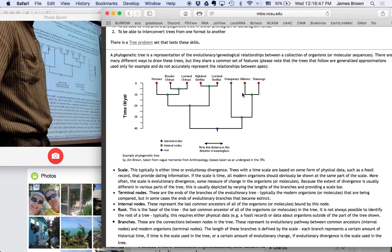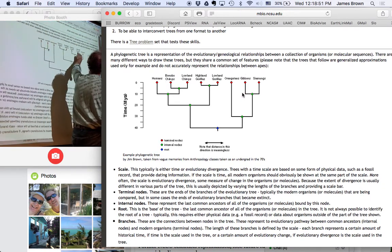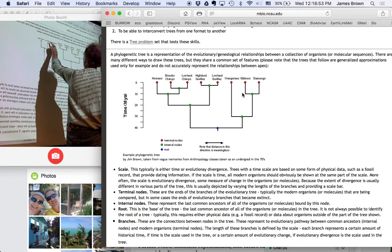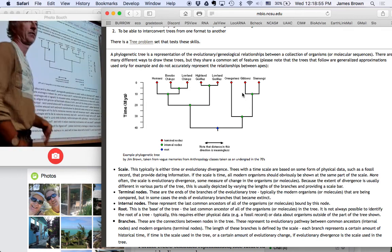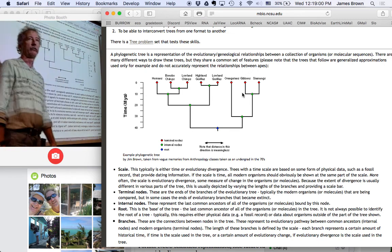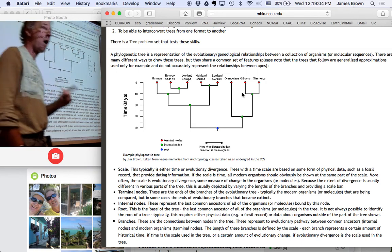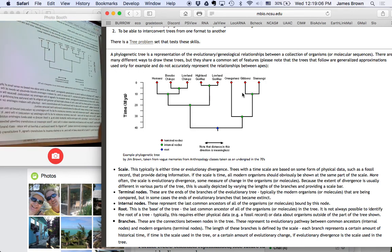So what are the parts of this tree? You've got terminal nodes. Some people call these leaves, right? It's the leaf of a tree. These represent the sequences you included in your analysis. Most of the time, these are all modern sequences. Unless you're working with extracting sequences from museum samples or ancient environments of some kind, all of these sequences come from living creatures, and so they're all modern.